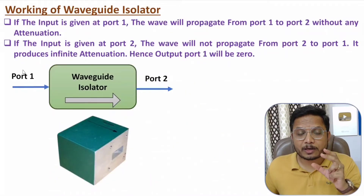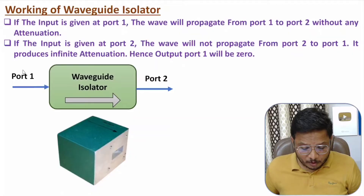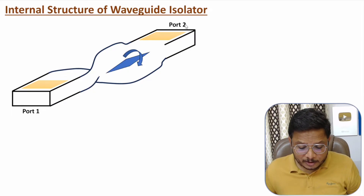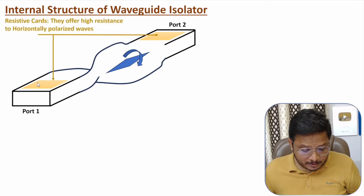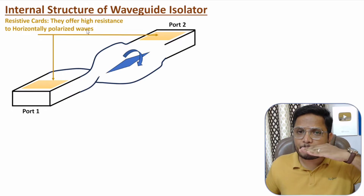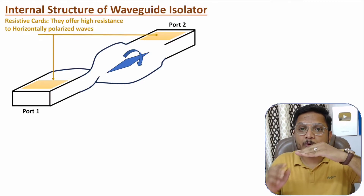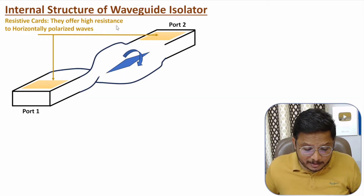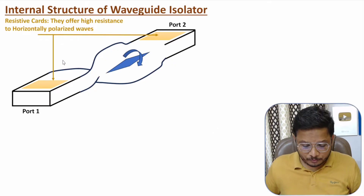To understand that working, you need to understand the internal structure. Here we have port one and here we have port two. Our agenda is to transfer signal from port one to port two, but signal should not come from port two to port one. In the internal structure, shown here by yellow color, we have resistive cards. These resistive cards offer high resistance to horizontally polarized waves, so if an EM wave is horizontally polarized, after passing through the resistive card there will be zero signal.